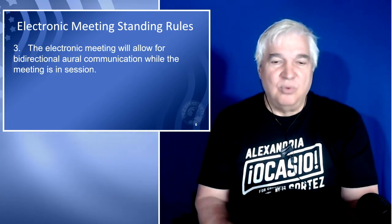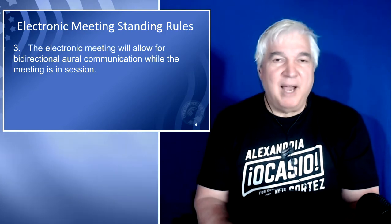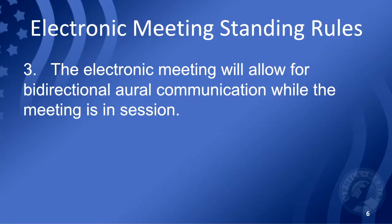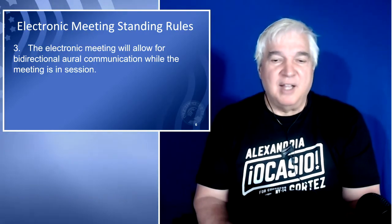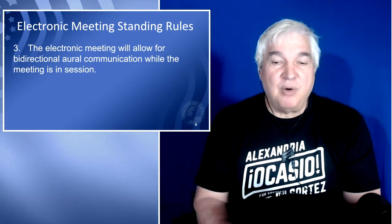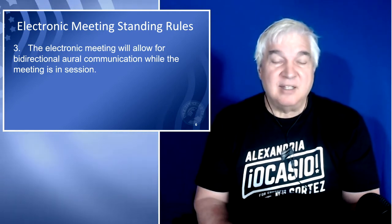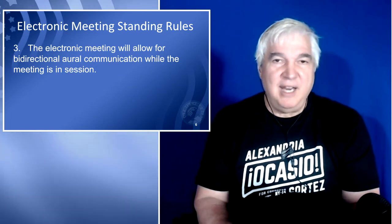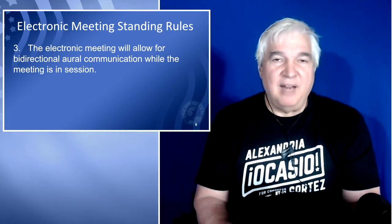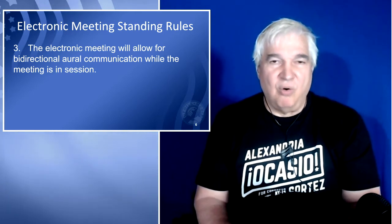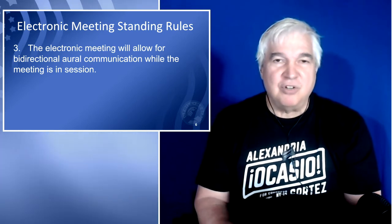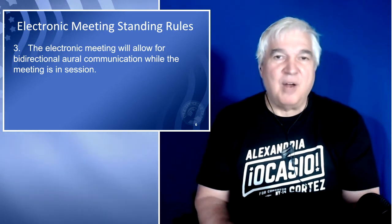The third rule is about bi-directional oral communication. It is against parliamentary procedure for you to be muted by someone else. The electronic meeting will allow for bi-directional oral communication while the meeting is in session — meaning you can hear what is being said and if you say something, you are heard. This is very important when you try to make a point of order or use some of the standard procedures that you find in democratically run meetings.